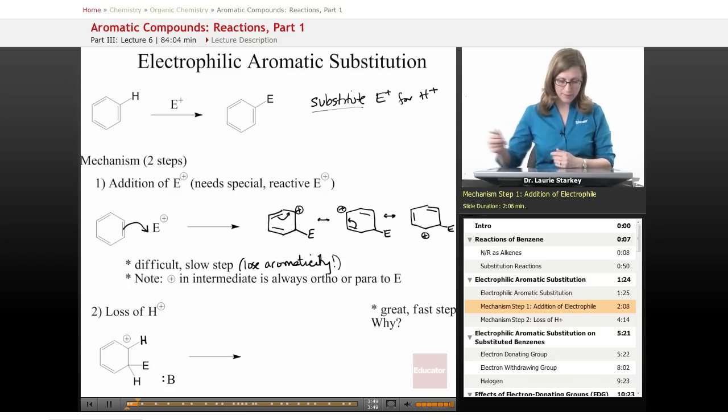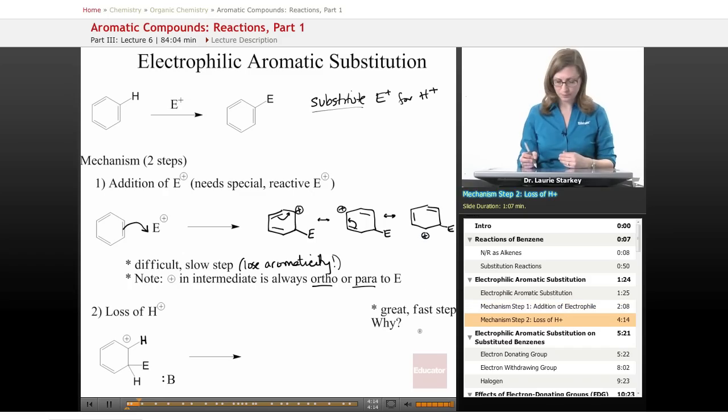Okay, and then another thing we can note is that in the intermediate that we have, the positive charge is always going to be either ortho or para to the carbon that added the electrophile. So here's our electrophile. The positive charge is either in an ortho position or the para position or the other ortho position. And again, that pattern will always be true, so that's going to help us be able to draw this mechanism and know we're doing the right thing. Okay, that's our first step in the mechanism.